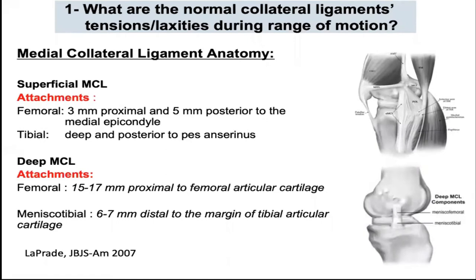It's important to understand normal knee anatomy and kinematics. The medial collateral ligament has two components: superficial and deep. The femoral attachment of the superficial component is 3 mm proximal and 5 mm posterior to the medial epicondyle. The tibial attachment lies deep and posterior to the pes anserinus. The deep component attaches 17 mm from the femoral articular cartilage and is about 7 mm from the tibial articular cartilage.